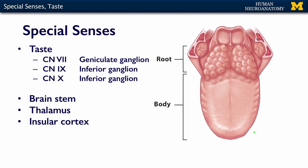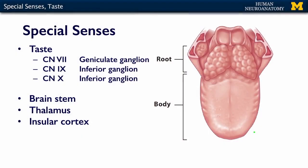With the seventh cranial nerve, the ganglion is called the geniculate ganglion, named for the bend or genu of the seventh cranial nerve as it takes its very circuitous course through the head. For cranial nerves 9 and 10, both have superior and inferior ganglia associated with them. The fibers related to taste have their cell bodies in the inferior ganglion of both nerves. So taste receptors in both the pre and post-sulcal areas of the tongue have their cell bodies in one of these ganglia.